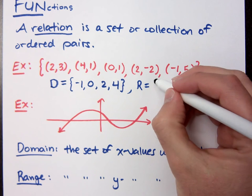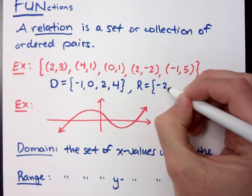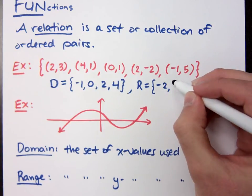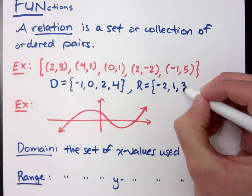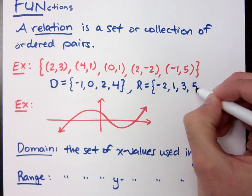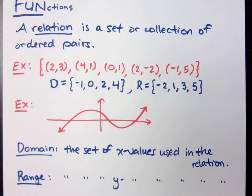Now, what is your range? What's the set of y values that I'm using here? From least to greatest. Negative 2, 1, 3, and 5. Notice that for the domain, you just look at the x's. For the range, you're only looking at the y values.